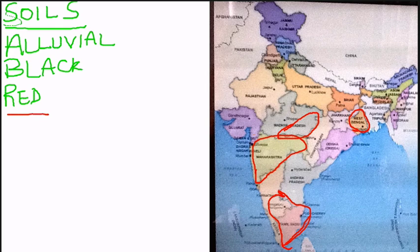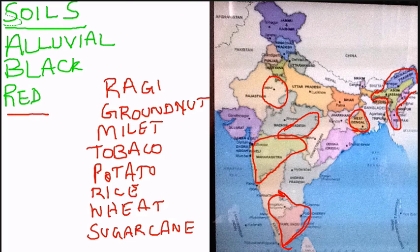northeastern states, and eastern Rajasthan. The crops grown here are ragi, rice, wheat, sugarcane, groundnut, millets, tobacco, and potato.